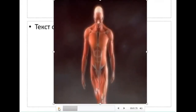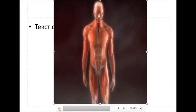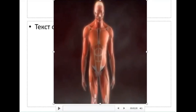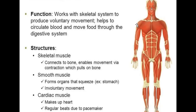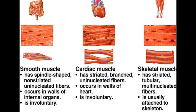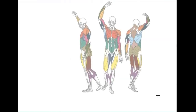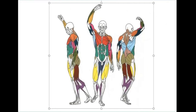It is very important for understanding: there are more than 600 muscles in the human body. The muscle system works with the skeletal system and joints to produce voluntary movement, helps circulate blood, and moves food through the digestive system. Structure includes skeletal muscle, smooth muscle, and cardiac muscle.